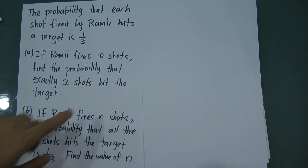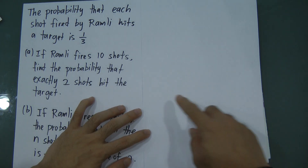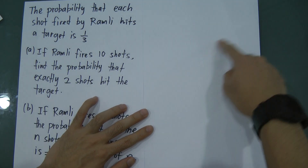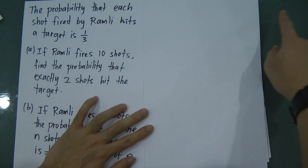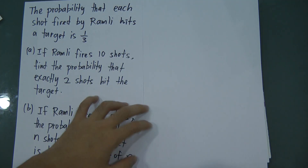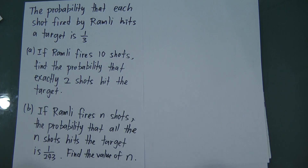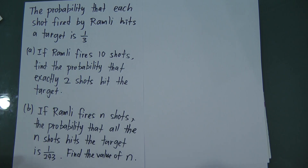If Ramley fires 10 shots and you draw a tree diagram, you would have to draw it 10 times — once for each shot. That's impossible to do efficiently. However, if you understand probability well enough, you don't need to draw the tree diagram at all.